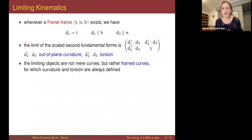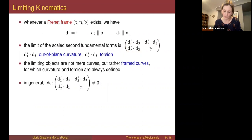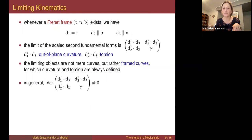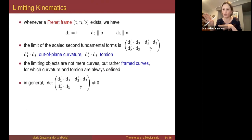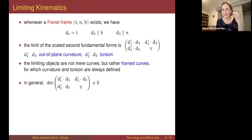Regarding the determinant-equal-to-zero constraint: the scaled curvature tensors satisfy det = 0, but when we pass to the limit weakly, this constraint may be lost. In general the limiting matrix may have a determinant different from zero.